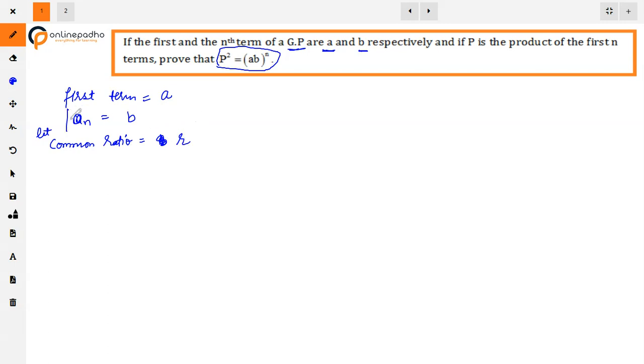Now we have the nth term given as B, so from here we can find the value of R. Since we have the first term and nth term, we can find R. The formula for AN in a GP is A times R raised to power n minus 1, which equals B.